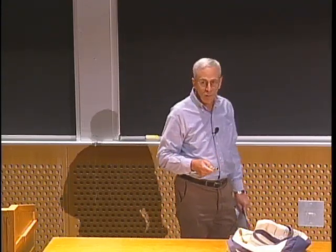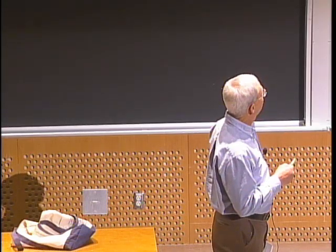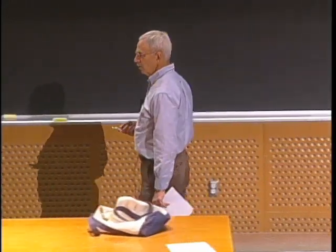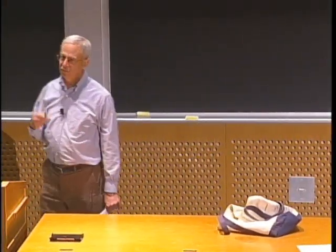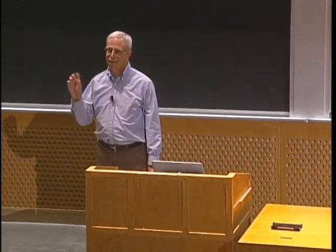Therefore, not surprisingly, when we end up doing the clustering, height plays a very important role because it has greater dynamic range, and we end up dividing clusters along that axis. On the other hand, if I take exactly the same data and scale it — so now the x-axis runs from 0 to 0.5 and the y-axis again from 0 to 1 — we see that suddenly, when we look at it geometrically, we end up getting a very different look of clustering. The moral is: you have to think hard about how to scale your features, because it can have a dramatic influence on your answer.